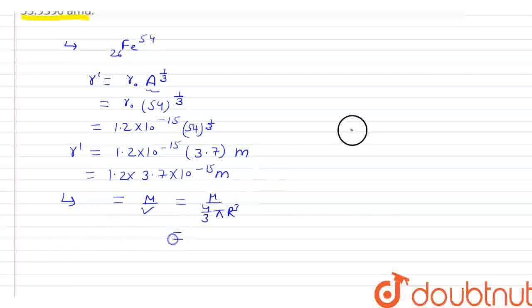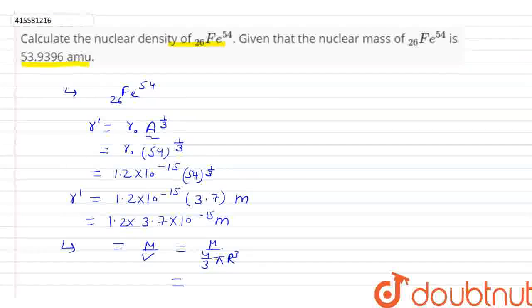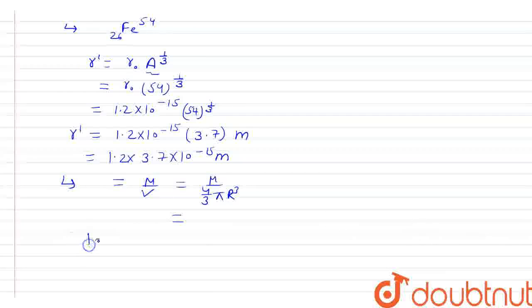Mass aapko given hai, but the mass is in amu, so we have to convert it to kg. 1 amu aapko pata hota hai equals 1.67 × 10^(-27) kg.